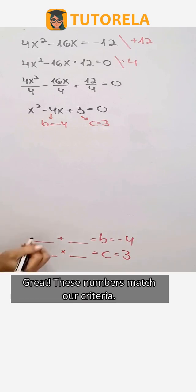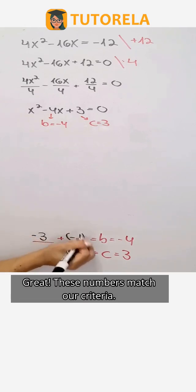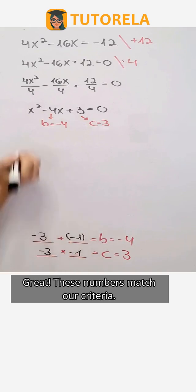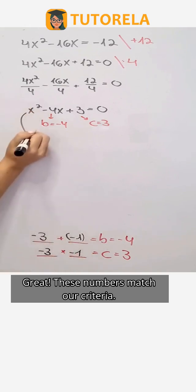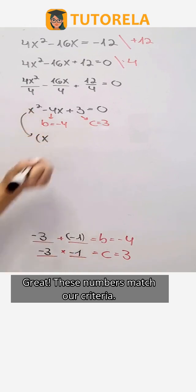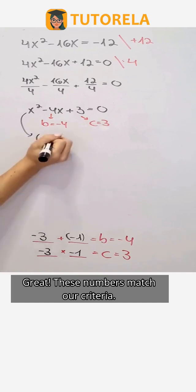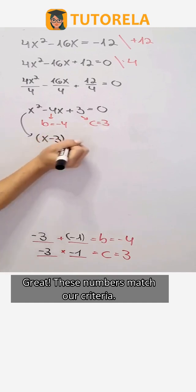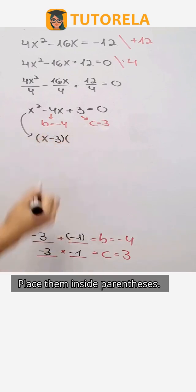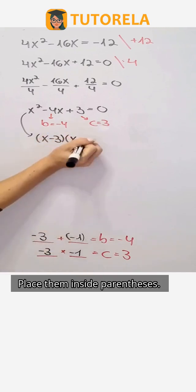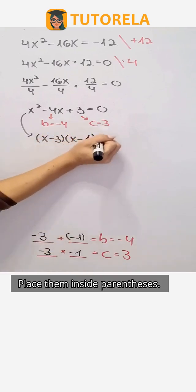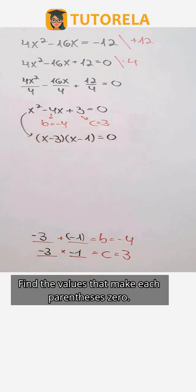Great, these numbers match our criteria. Place them inside parentheses. Find the values that make each parentheses zero.